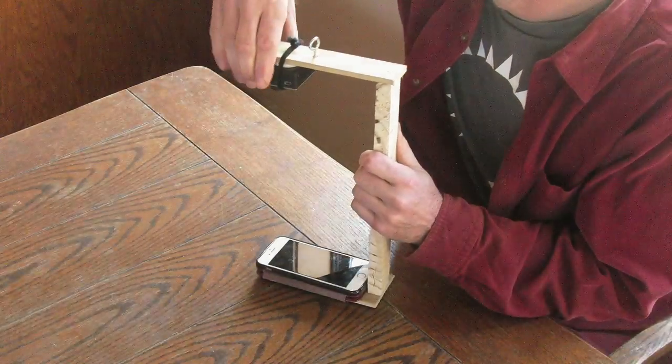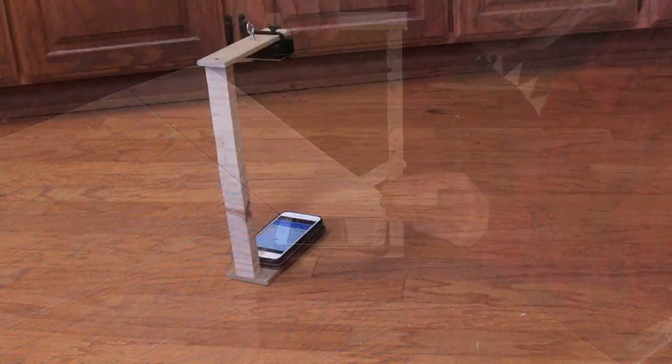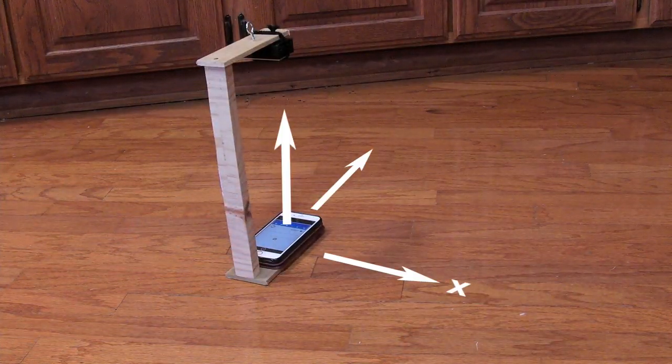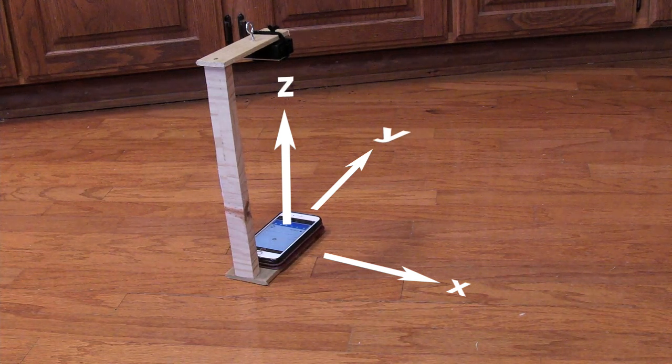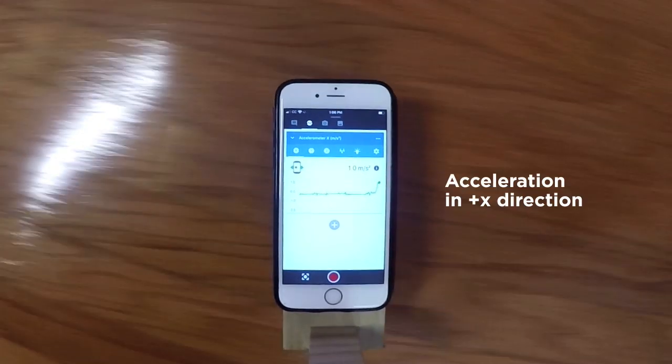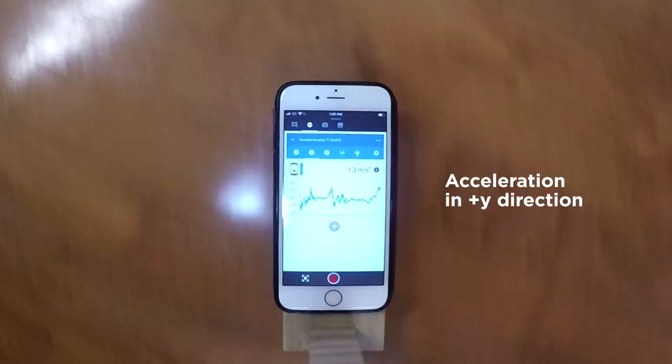I've loaded my phone with an accelerometer app and attached it to a camera. Here are the axes of this setup: X, Y, and Z. When I accelerate the system in the positive direction along an axis, I get a positive acceleration reading in that direction.